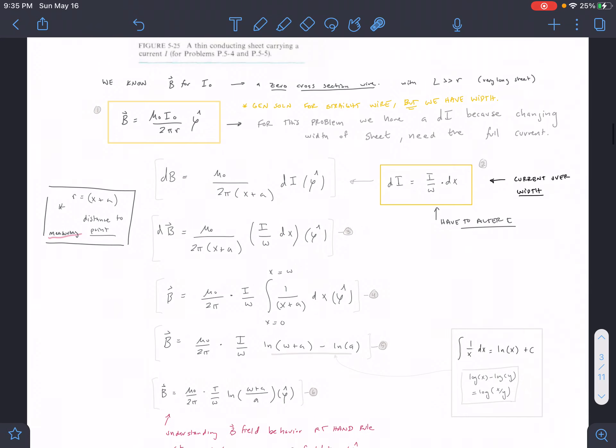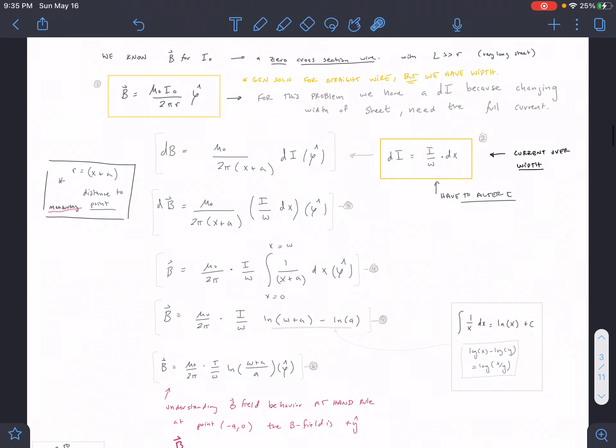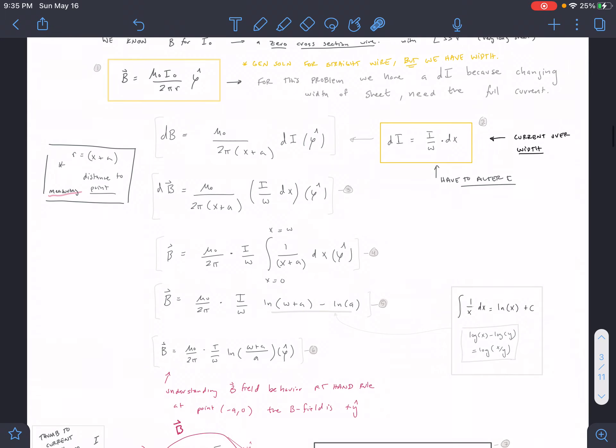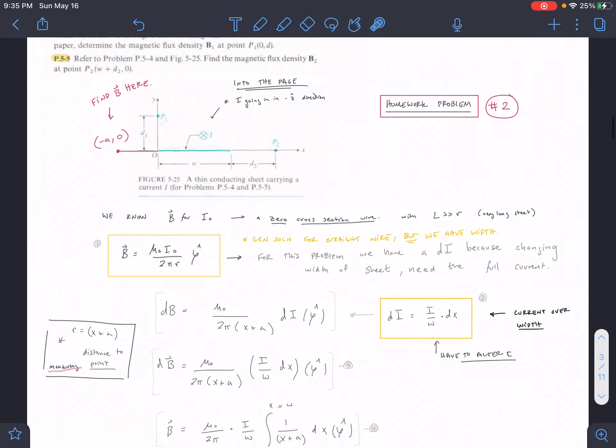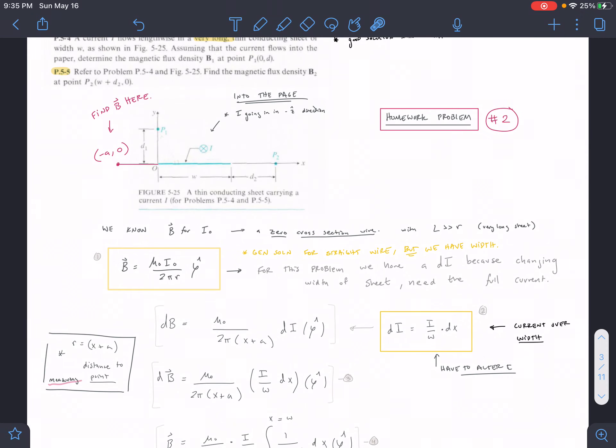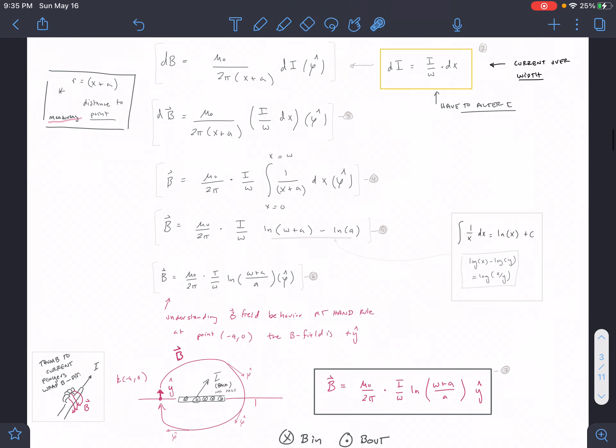We plug in this guy here. We're going to go ahead and simplify our equation a little bit here and then take the integral. For x we're going from zero to w, right, because x is kind of any point along this w line.